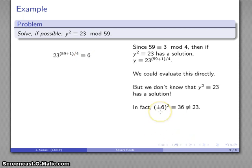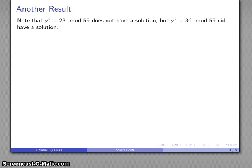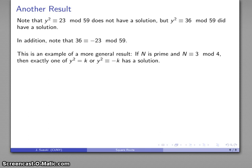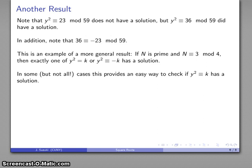In this case, (±6)² = 36, which is absolutely not congruent to 23. So y² ≡ 23 (mod 59) does not have a solution — but y² ≡ 36 did, and 36 ≡ −23 (mod 59). This illustrates a general result: if n is a prime with n ≡ 3 (mod 4), then exactly one of y² ≡ k or y² ≡ −k will have a solution. In some cases this gives us a fast way to check whether a solution exists.